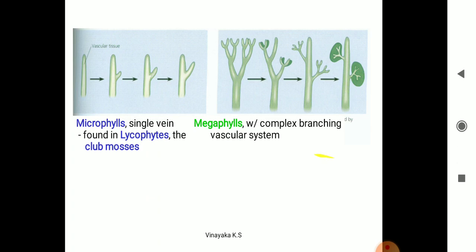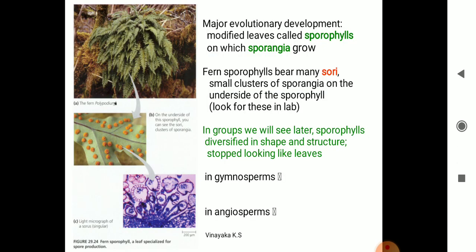The microphyll and megaphyll arrangement of leaves leads to the sporophyll structure. A sporophyll is the spore-bearing structure. In Psilotum they bear a special sporangia characteristic; in Selaginella and Lycopodium they bear a special strobilus structure; but in ferns, the sporophyll bears sori or small clusters of sporangia that produce the spores.